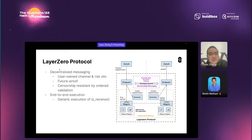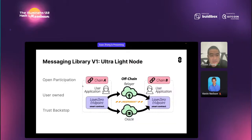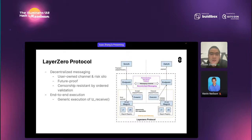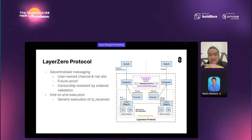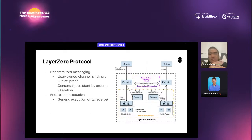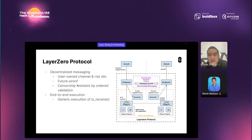First principles. The first will be the decentralized messaging, which you can imagine like you're talking to your friend on Telegram — you have a channel. That channel is totally user-owned and risk-siloed, but only the configuration. Anybody that you configure to interact with the channel can push messages into the channel, and whatever happened in one channel won't affect the other channel. That's what I mean by user-owned channel. And the second part is future-proof. If you look at the right side of the slide, the overall architecture is like the internet stack.